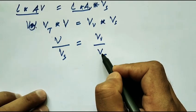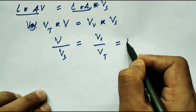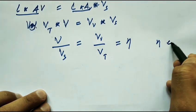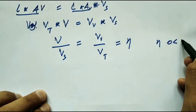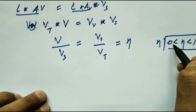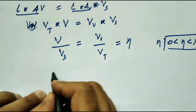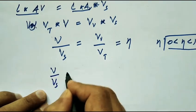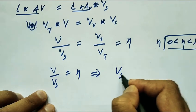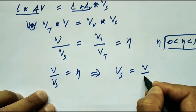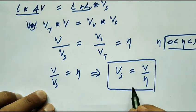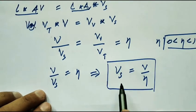Volume of voids upon total volume is porosity n. Porosity lies between 0 and 1 — it should not be less than 0 or greater than 1. So we get: V upon Vs equals n, or we can rewrite this as seepage velocity Vs equals discharge velocity V upon porosity n. This is the important equation for seepage velocity.